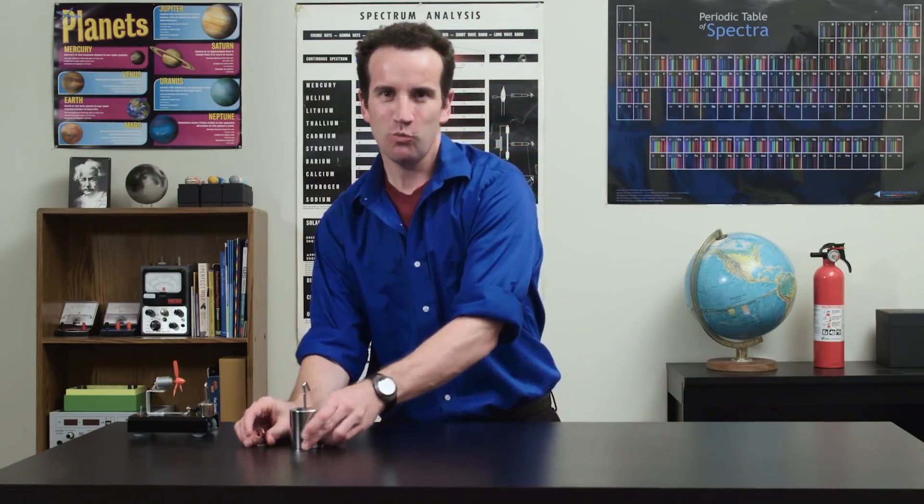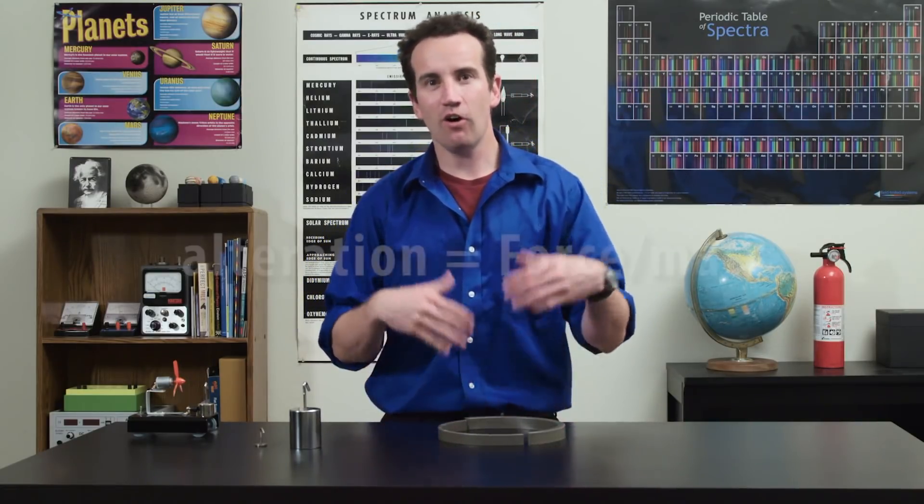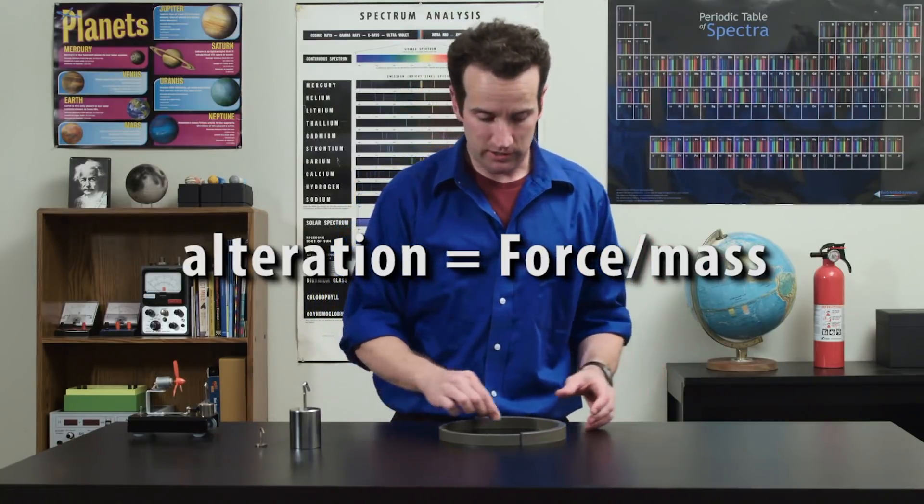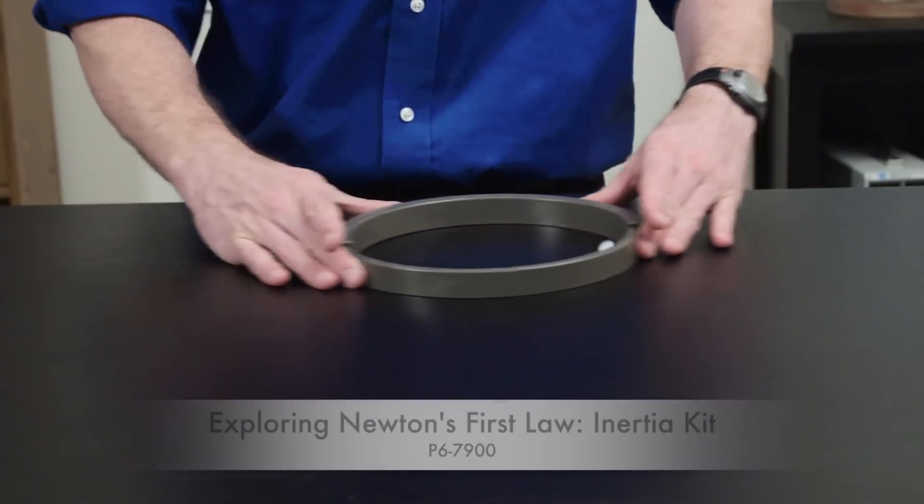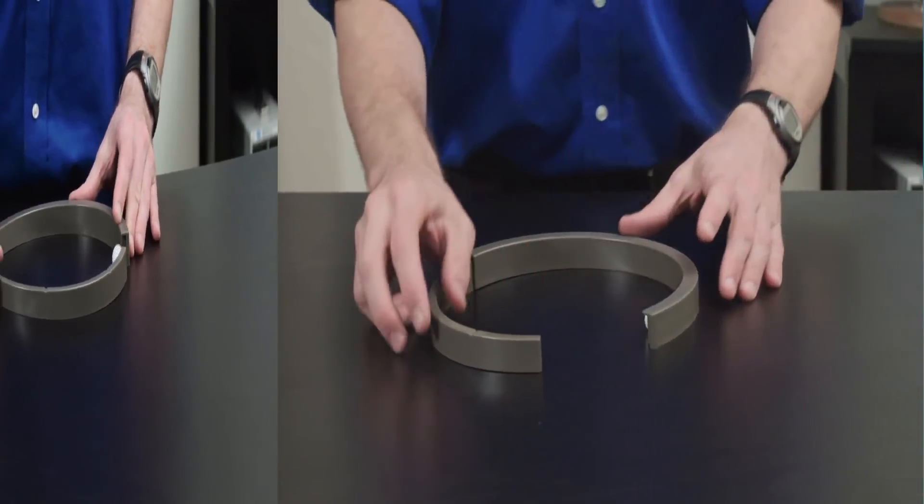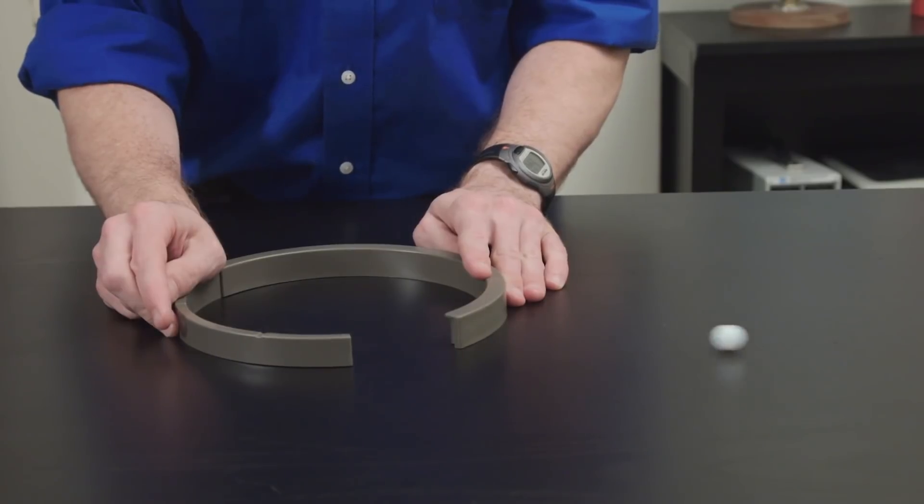In our physics classes, we often overemphasize acceleration, or changes of speed, when we should be emphasizing alterations of motion. For example, changes of direction: circular motion. Circular motion is a good example of an alteration of motion. And when the force stops, the object goes off in a straight line at constant speed.